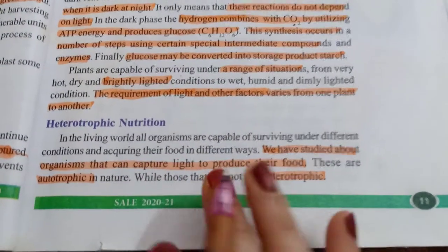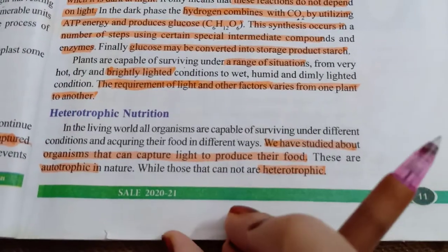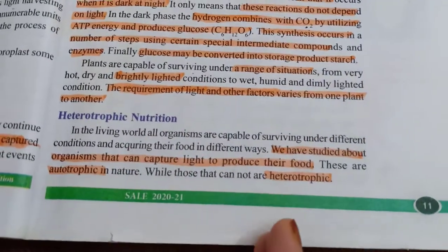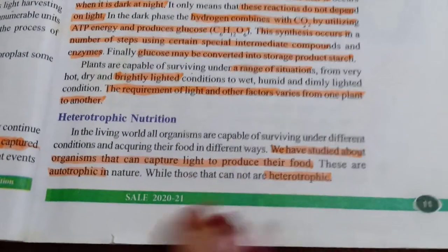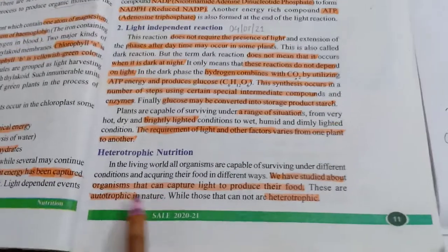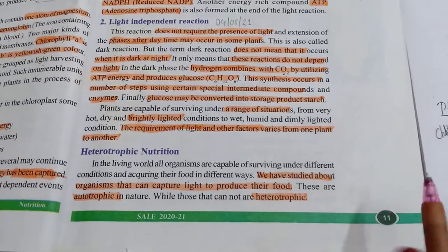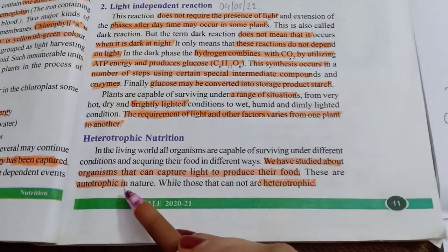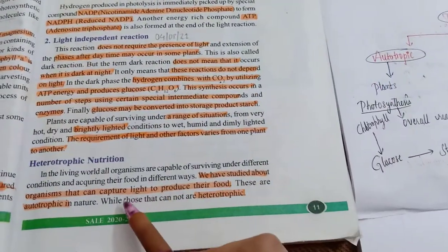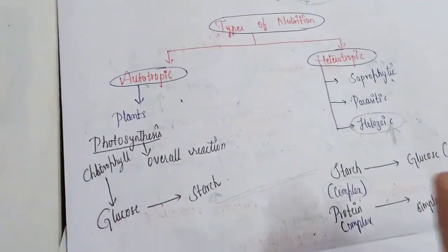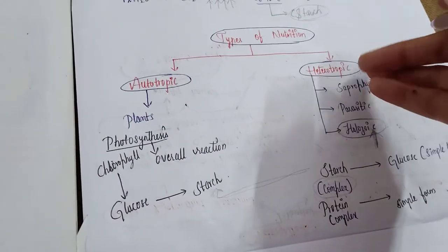Living organisms are capable of surviving under different conditions and acquiring their food in different ways. All living organisms in the world can survive in different conditions and get food in different ways — they struggle for food and are capable of surviving in this living world. We have studied about organisms that capture light to produce food — that is, plants, which are autotrophic. Those that cannot prepare their own food are heterotrophic. We are heterotrophic and holozoic — we depend on plants or other animals.